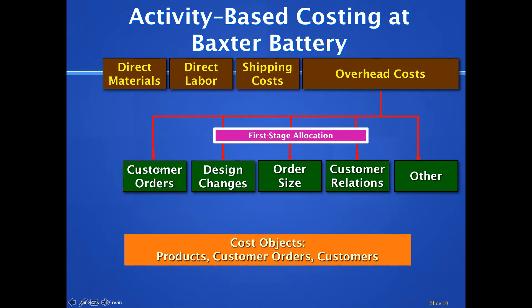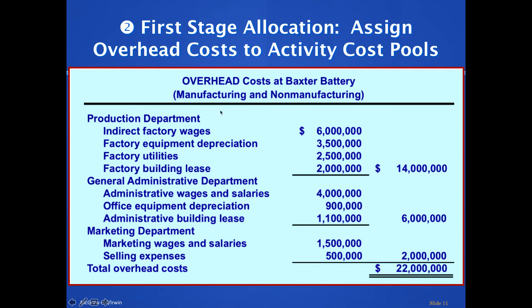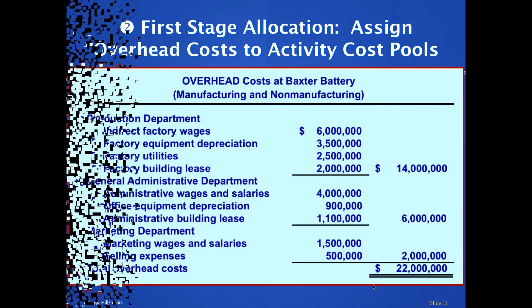The first stage of allocation is figuring out how much goes into each activity bucket. We've been provided with all manufacturing and non-manufacturing overhead costs. You can see the production overheads we've discussed in other chapters, but now we're also throwing in administrative overheads — a complete change from before. The total overhead costs are 22 million dollars — remember that magic number.